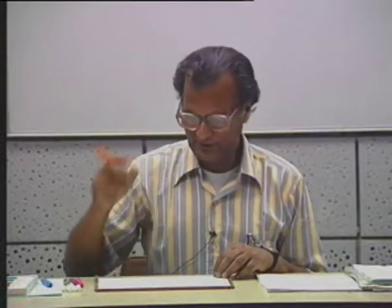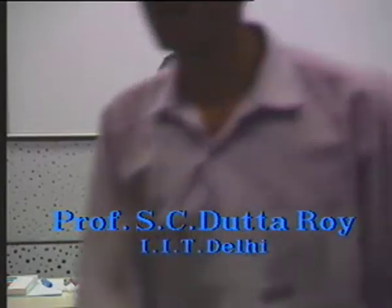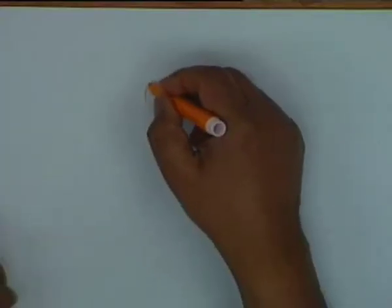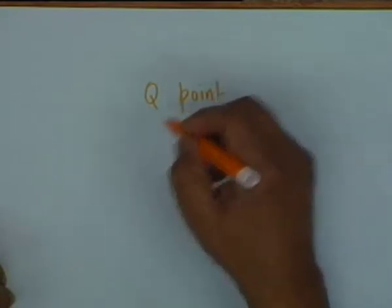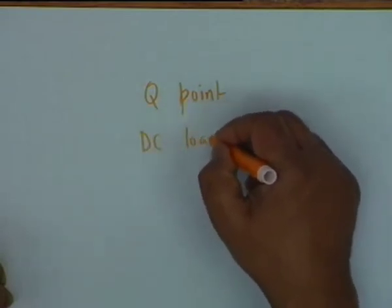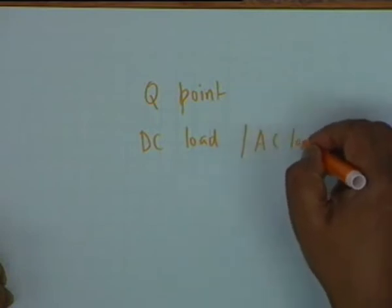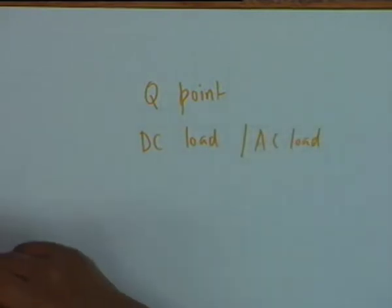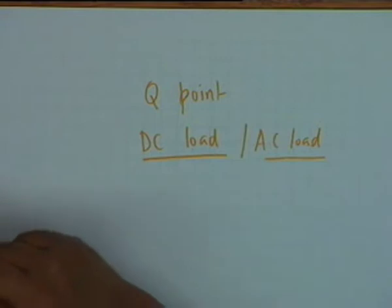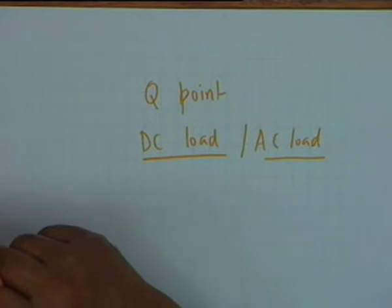This is the second lecture and the topic is power amplifiers that we started yesterday. In yesterday's lecture we discussed determining the Q point and the distinction between DC load and AC load. For amplifiers which have to handle a signal, the DC load may be different from the AC load, and AC load resistance is usually smaller than the DC load resistance.